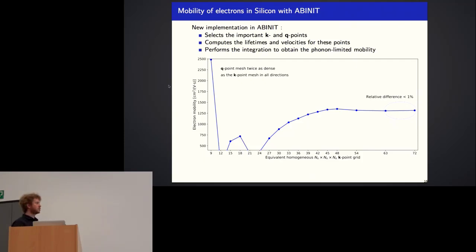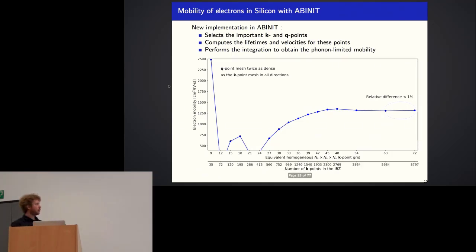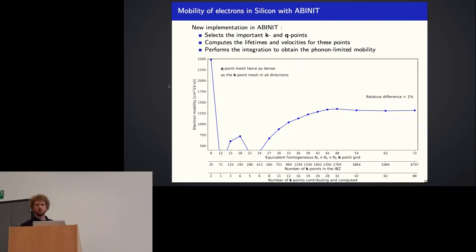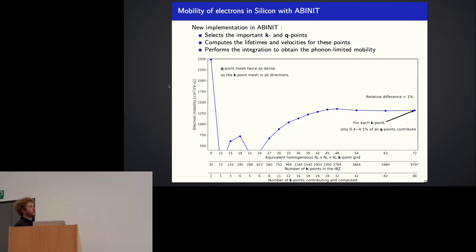For silicon electrons, plotting mobility as a function of the K point grid: for the 45×45×45 case, using a Q point mesh twice as dense (90×90×90), if we computed all K points we would have 2300 K points requiring lifetime calculations. But filtering to only K points that contribute to the mobility reduces this to 28, a factor of almost 100 in computational time — more than 1% of K points. For Q points, less than 4% are actually necessary for the lifetimes, giving an additional factor of 25.